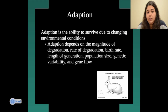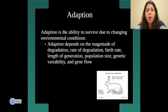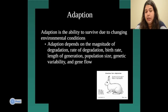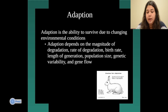Adaptation is the ability to survive due to changing environmental conditions. For example, an animal might grow more fur when it gets colder or build a better shelter. Adaptation depends on magnitude of degradation, rate of degradation, birth rate, length of generation, population size, genetic variability, and gene flow. There is a picture of a snowshoe hare — a type of rabbit — showing how it has adapted to its environment.